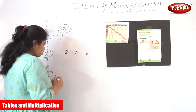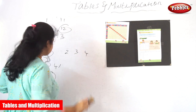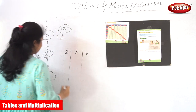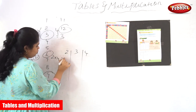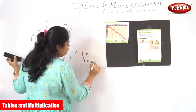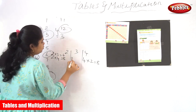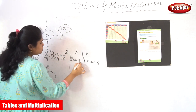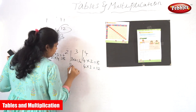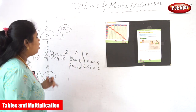Isn't it, children? So see here — in the 2 tables, 2 into 4 is equal to 8, whereas in the 4 tables, 4 into 2 is equal to 8. See here: 2 into 3 is equal to 6, here 3 into 2 is equal to 6. 4 into 3 is equal to 12, here 3 into 4 is equal to 12. The same numbers keep on repeating, isn't it?